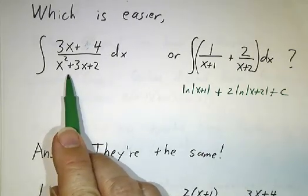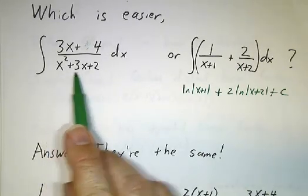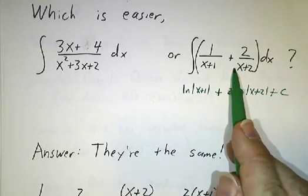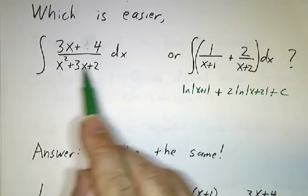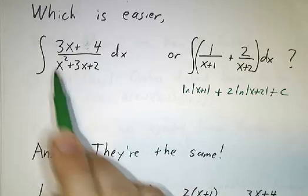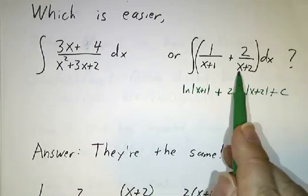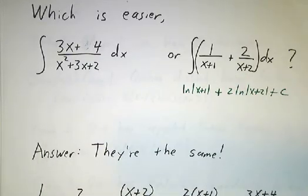So the way to do this integral is to recognize that it's really this integral. In other words, to take this ugly ratio, two simple terms. Now this is an example of the partial fractions decomposition.